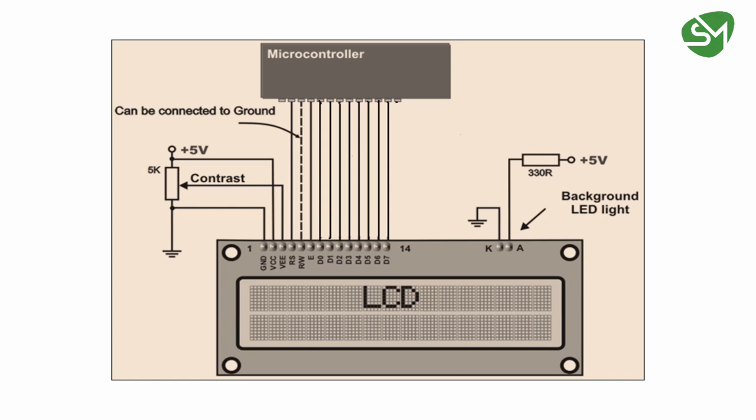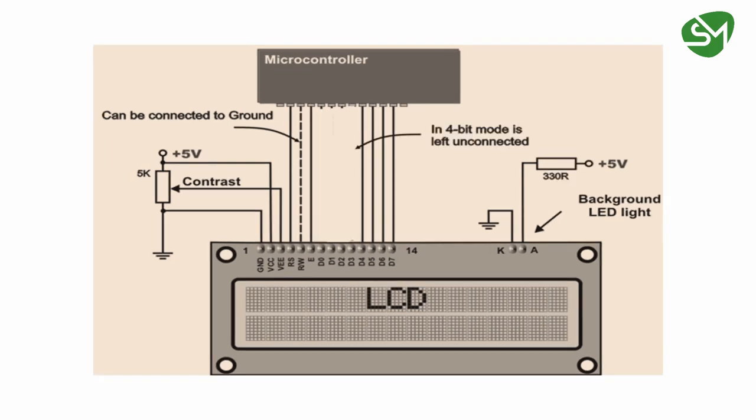First we need to define the length of data — either 8-bit or 4-bit — then we pass the address at which we are printing to the instruction register, and then we pass the data to the data register, and the character gets printed. In the next lecture we will interface this LCD to a microcontroller. Thanks for watching.